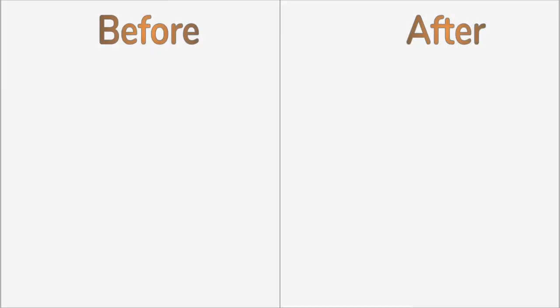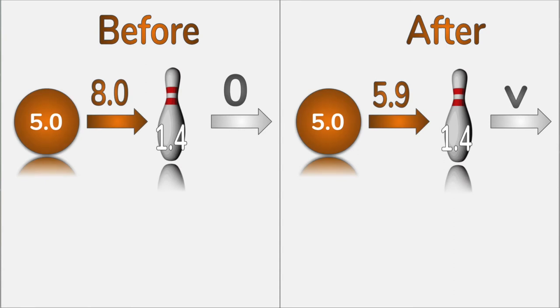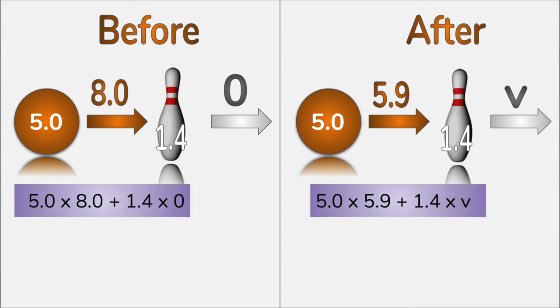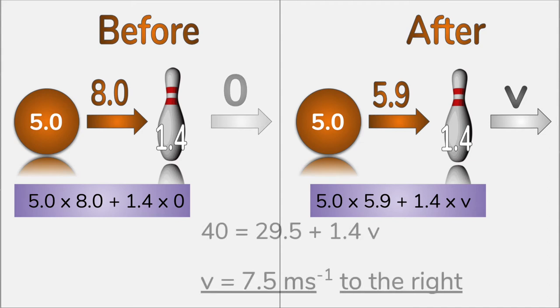We approach the question as a before and after situation. Then we sketch the situation where the relevant variables include the masses of the objects and the velocities that we know. We calculate the momentum on each side before the collision and after it. And finally, with one missing variable, we can use the formula to solve for V. It's 7.5 meters per second, and the pin travels in the same direction as the ball was traveling.